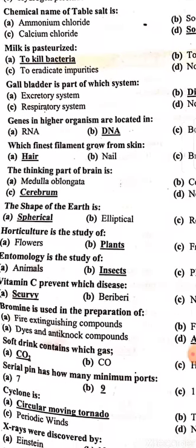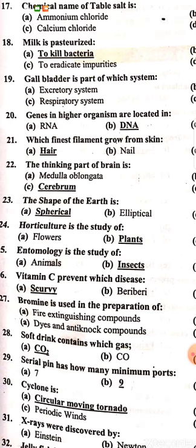Bromine is used in the preparation of fire-proofing agents, fire extinguisher compounds, dyes, and anti-knock compounds. Soft drinks contain carbon dioxide gas. A serial port has a minimum of nine ports.